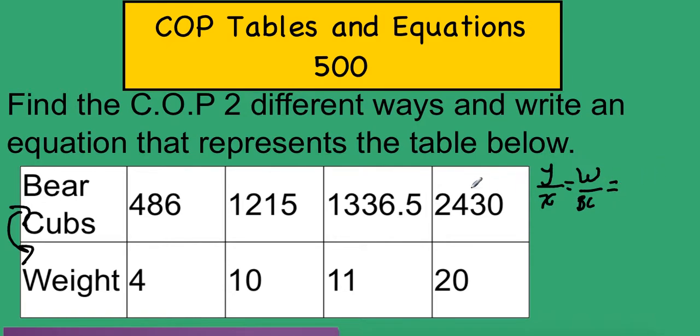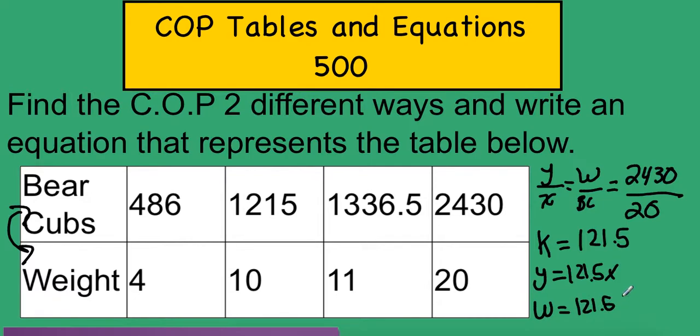I'm going to use a random value. I'm going to pick this one. I'll say that 2,430 over 20 bear cubs. If I divide that, I see that I have a constant of 121.5. If I was to write this as an equation, I can write y equals 121.5x. Or I can use these values and say that the weight equals 121.5 times the number of bears.